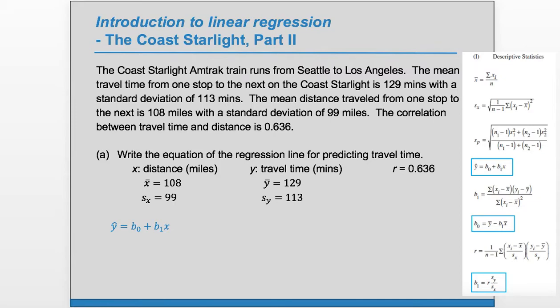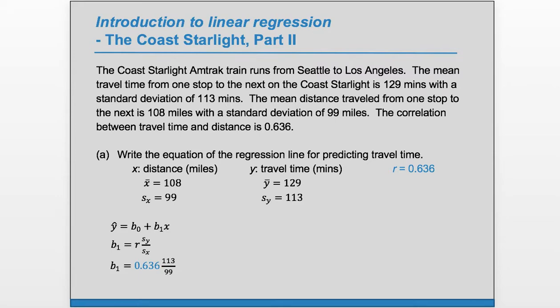To find b1, we're going to find b1 first. So to find that, we're going to use this one here: r times s sub y over s of x. And so we'll just plug in the numbers. r we know, s sub y, s of x we know, so we plug those in. Be careful to plug them in in the correct spots. And this gives us our b1: 0.7259 minutes per mile.